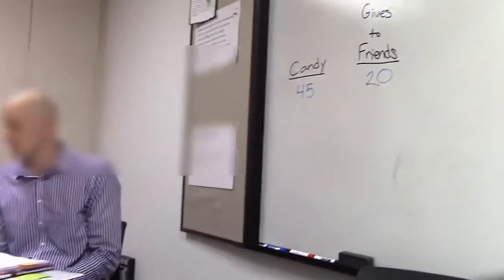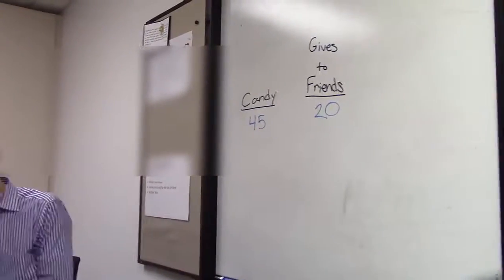Our first problem is: Kyle has 45 pieces of candy, and he is so nice that he's willing to share — he gives 20 of them to his friends. So Kyle has 45 pieces of candy and he gives 20 pieces to his friends. Can we first use these manipulatives to model what 45 would look like? If we can let these be our pieces of candy, could you show me what 45 pieces of candy could look like?